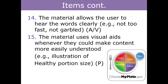Item fourteen is for AV only: the material allows the user to hear the words clearly — not too fast, not garbled, no audio cutting in and out. This is important: if the AV item is not on YouTube or doesn't have closed captioning, item fourteen becomes really important. If you know the video is on YouTube or platforms like NIH Senior Health or MedlinePlus — which all have transcripts — it's less critical. Keep that in mind when scoring item fourteen.